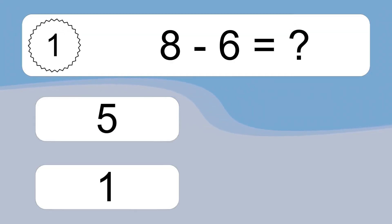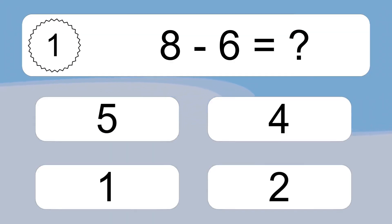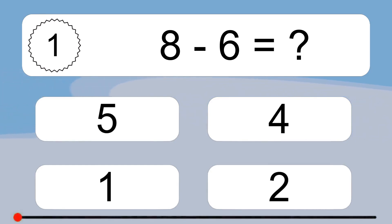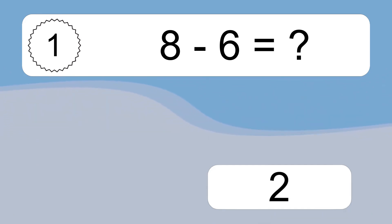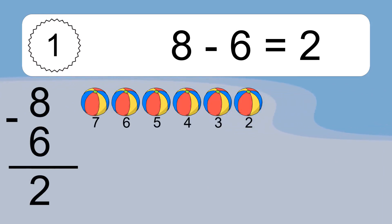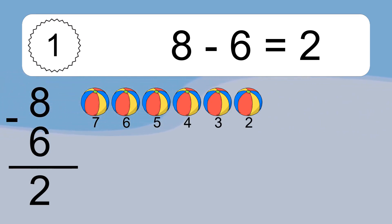8 minus 6 equals what? 8 minus 6 equals 2. Let's count it: 7, 6, 5, 4, 3, 2.